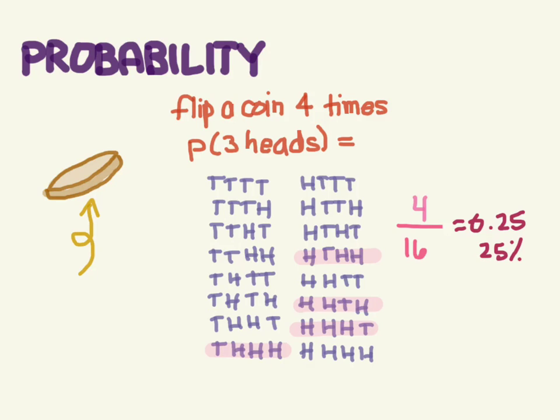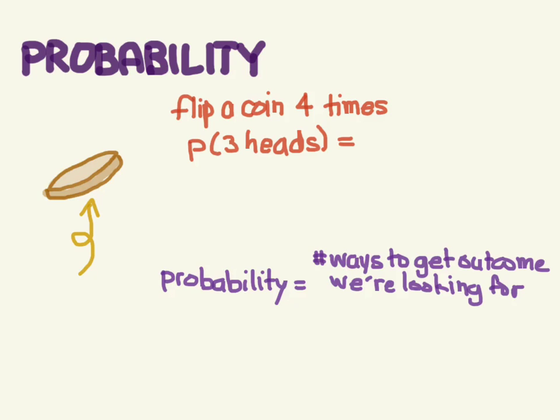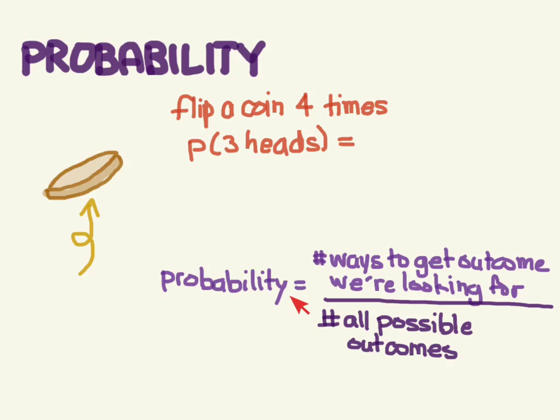So that means that if you were to flip a coin four times, about a quarter of the time you're going to get three heads. So probability is the number of ways you can get the outcome you're looking for over all the possible outcomes. And in statistics, biostatistics, and medicine, you're going to see probability a lot. So it's very important that you get an intuitive understanding for what this is. Next we're going to look at odds. See you in the next video.